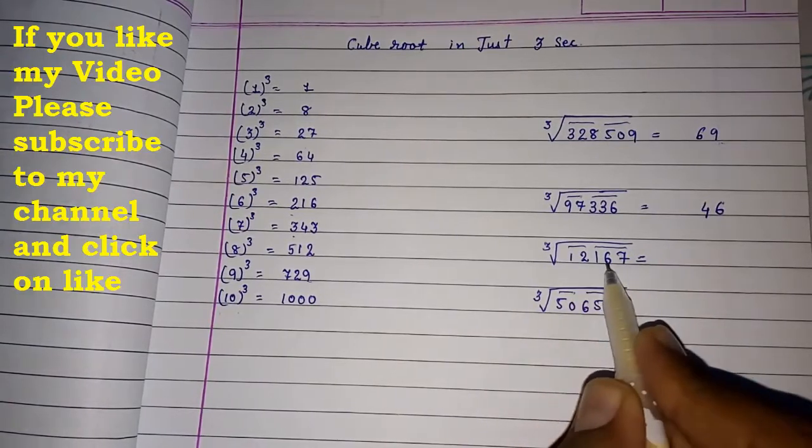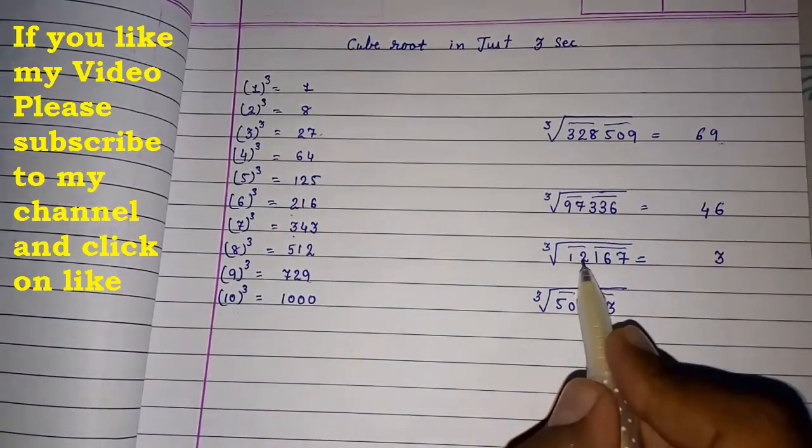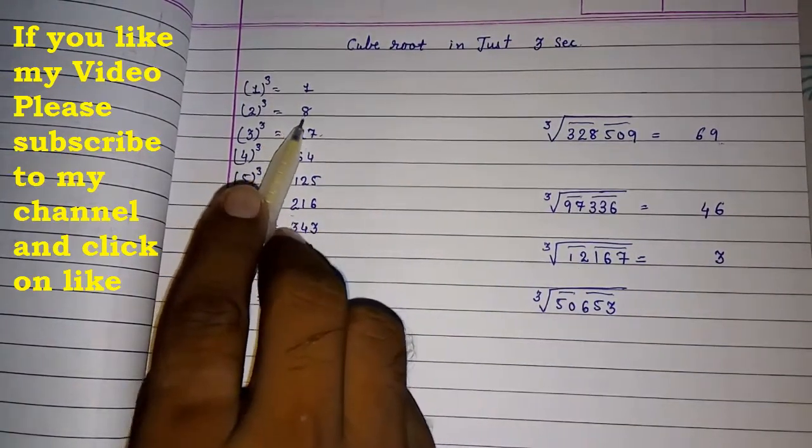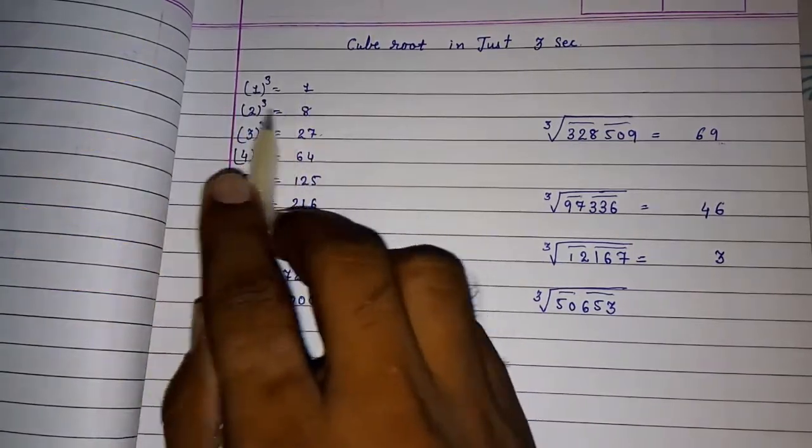Now we know it's 7. So ending with 7. Here 3. So last digit will be 3. 12. So 12 will come between 8 and 27. So 8 is there. So we have to take the previous. That is 2. 23 cube root of this number.